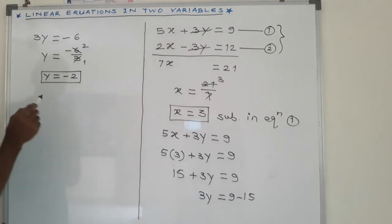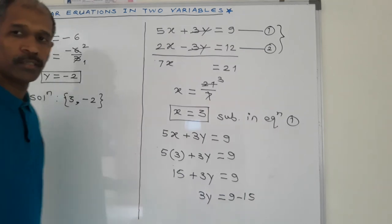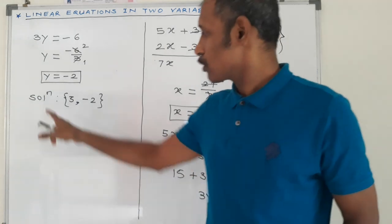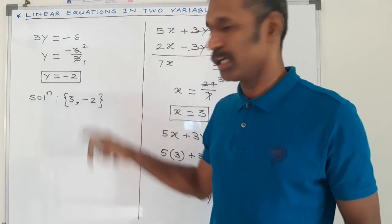Finally, we write here the solution, value of x and value of y. This is our final answer. Solution, curly bracket, 3 comma minus 2.